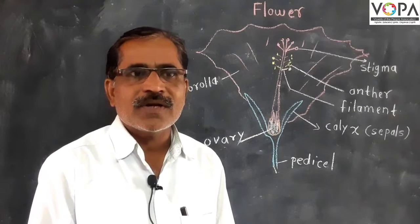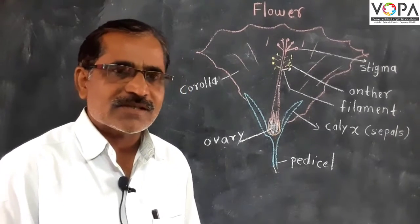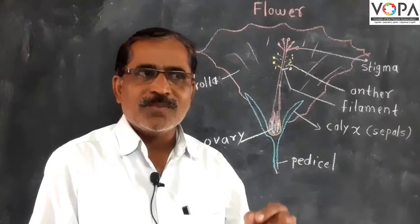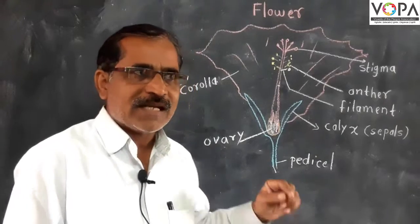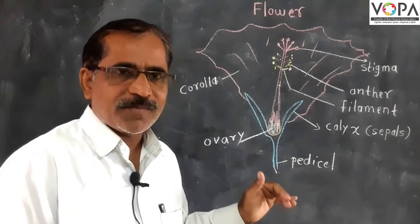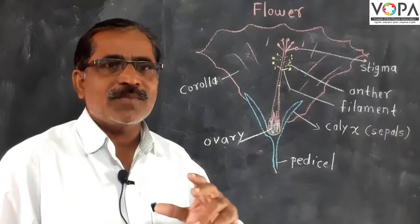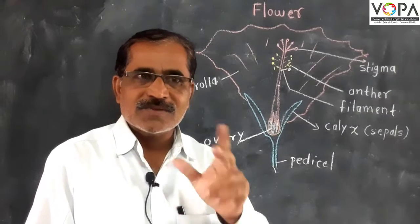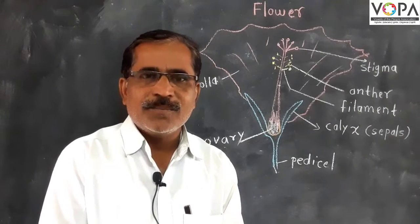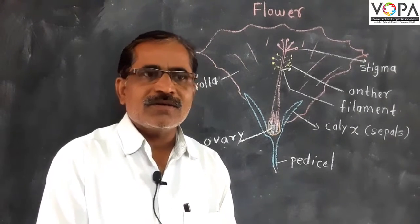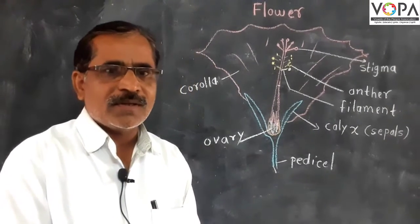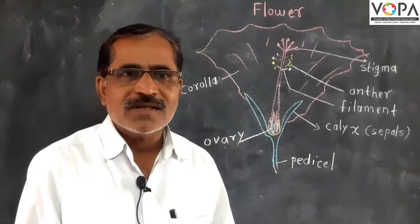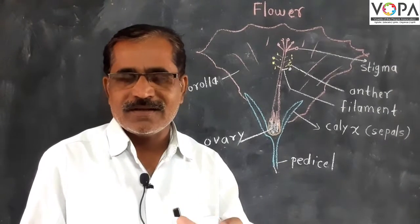Each flower has a stalk. This stalk is called a pedicel. One part of the pedicel is attached to the stem and the other part of the pedicel is expanded, and petals and other parts of the flower are based on the pedicel.